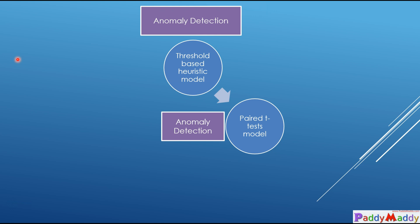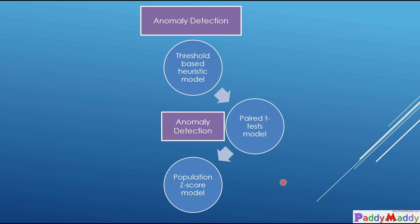There is an additional method called the paired t-test model. This is a mathematical method that compares observations in a data set, looking for statistically significant differences between their means. Paired t-tests are used on data sets consisting of observations related to each other — for example, the count of stop errors or restarts on the same device before and after a policy change, or app crashes before and after an operating system update.